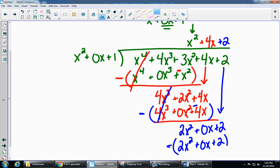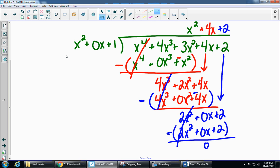Now we subtract. So 2x squared minus 2x squared cancels. 0x minus 0x is 0. And 2 minus 2 is 0. Which means the whole thing is 0 down here.